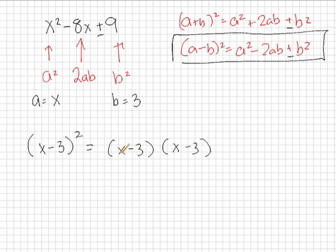If we FOIL this out, we're going to get x squared minus 3x minus 3x plus 9, which gives us x squared minus 6x plus 9. That is not the same thing that we have up here, so this is not a perfect square.